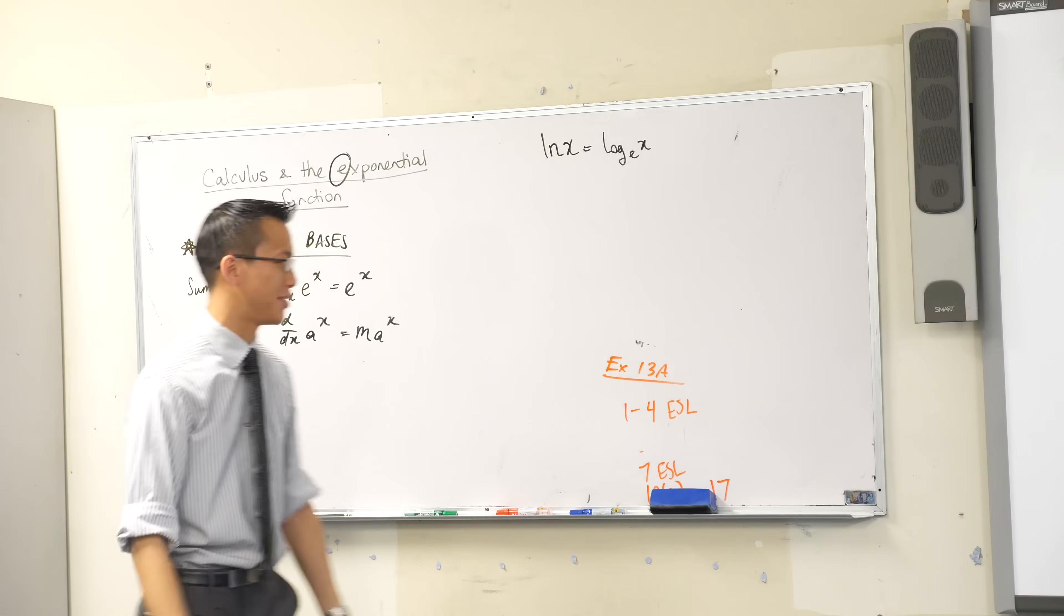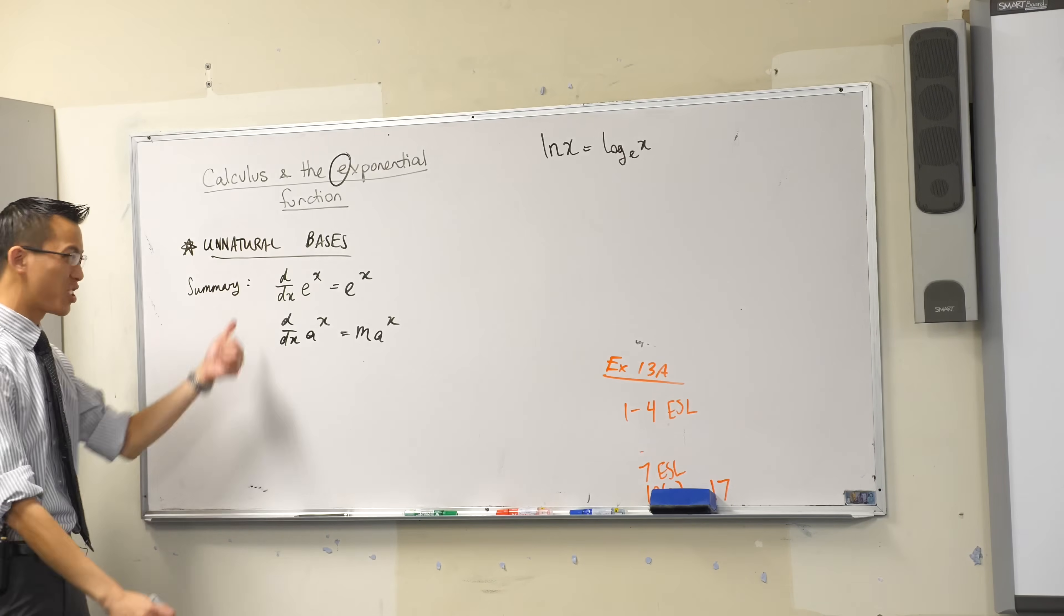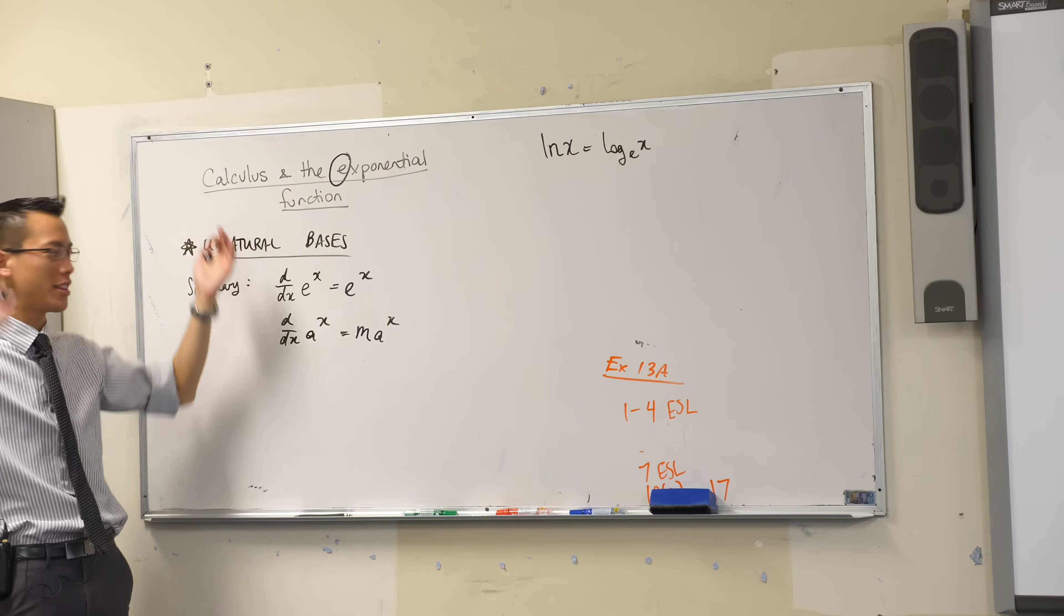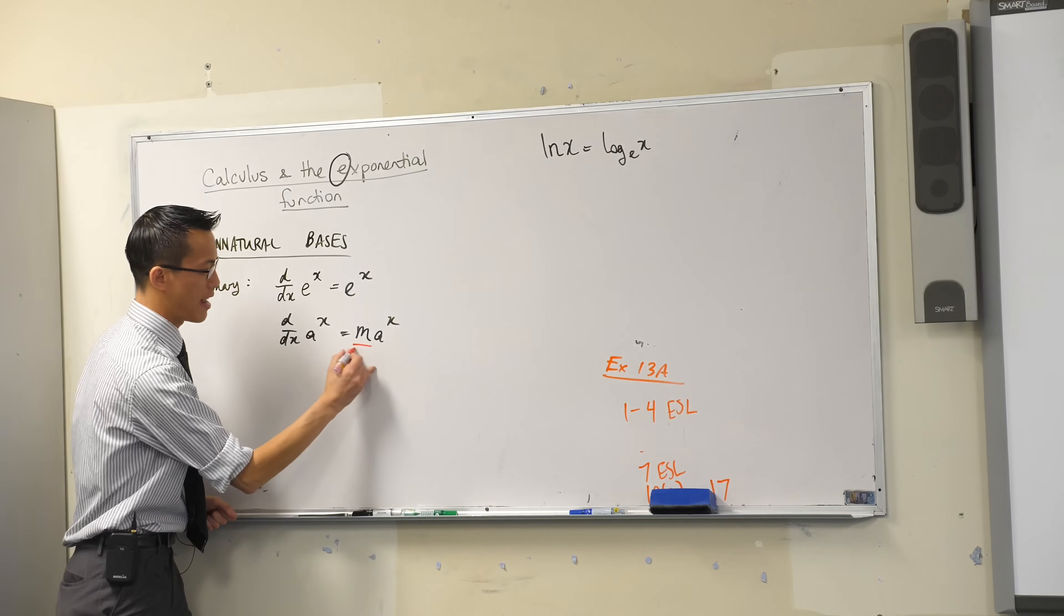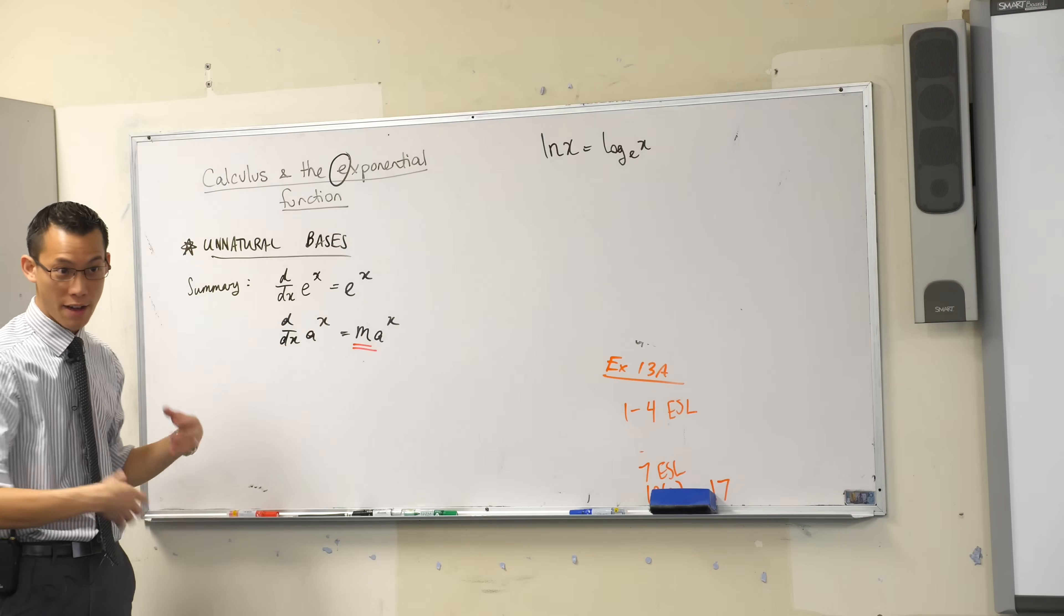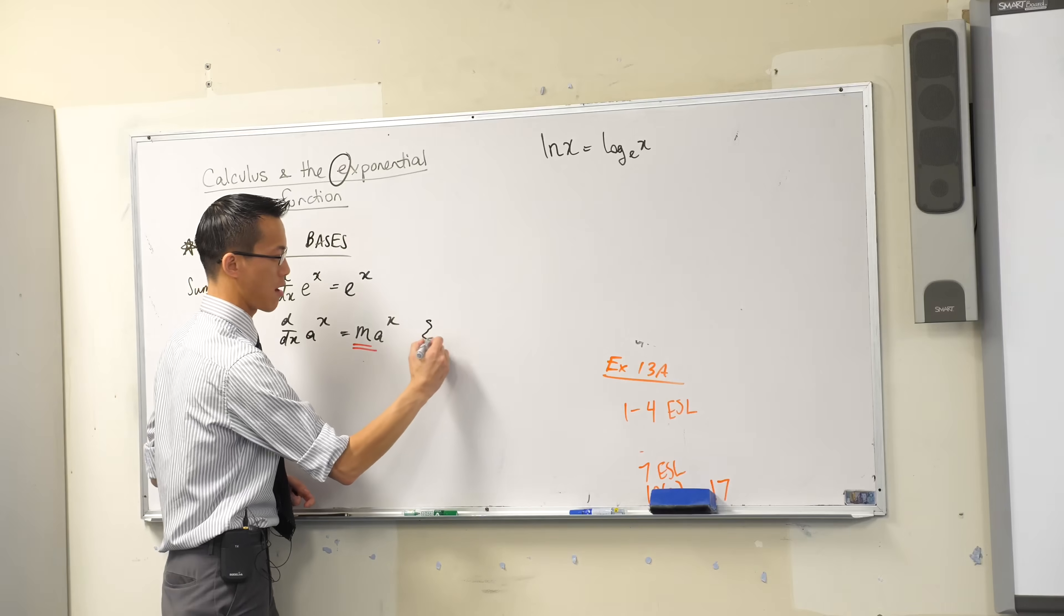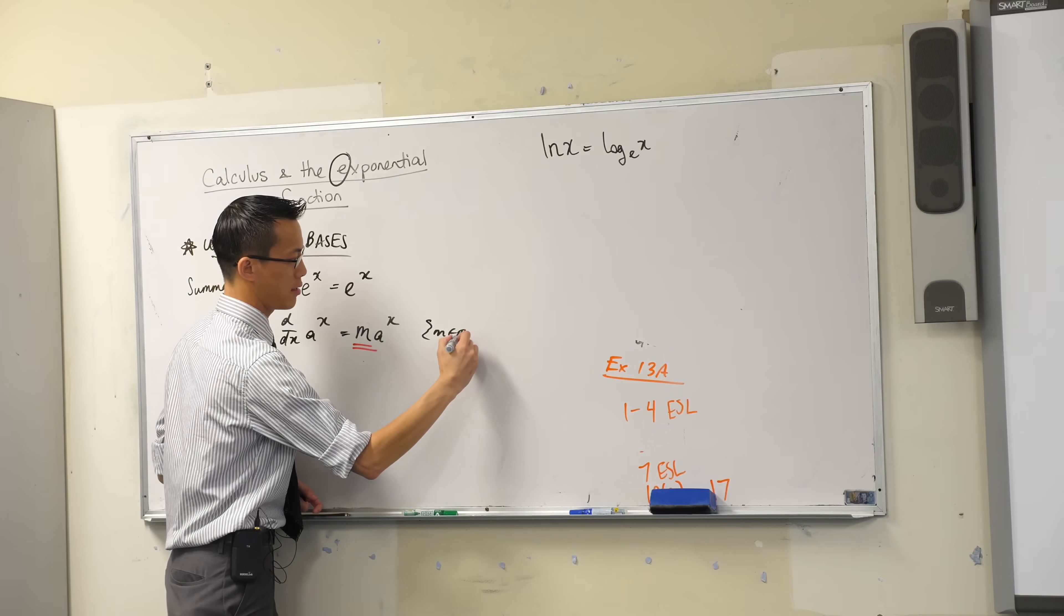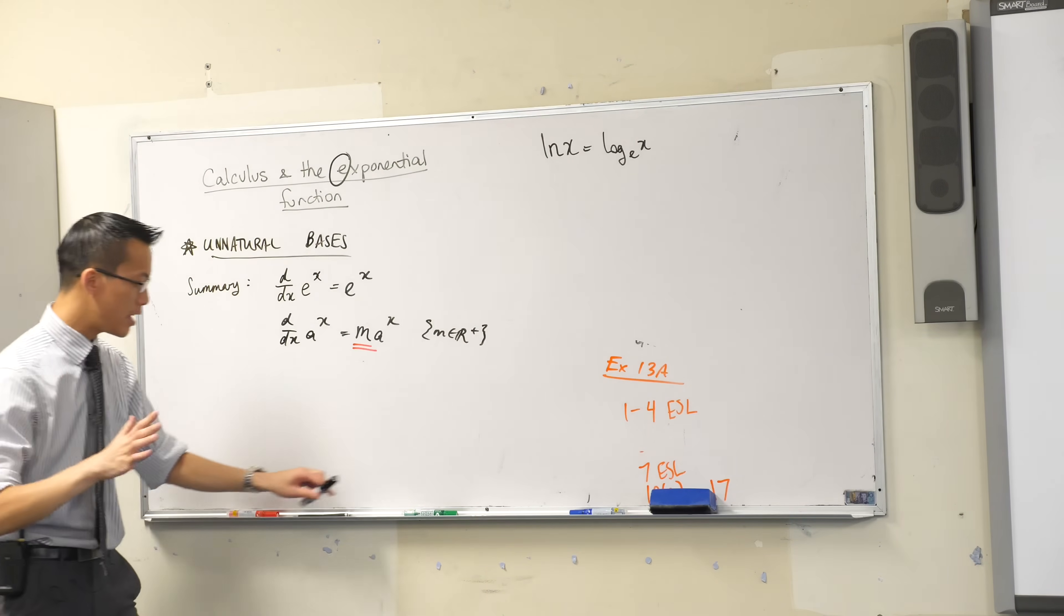So when you have other bases, bases that aren't e, this is not official at all, it's just what I call them. They're sort of unnatural. You're like, what do I do with this? It's awkward. How do I fix this? So what I want to do right now is try and find out what the Dickens that is.